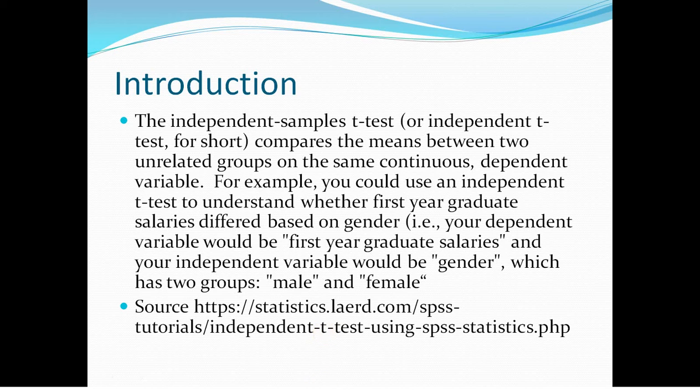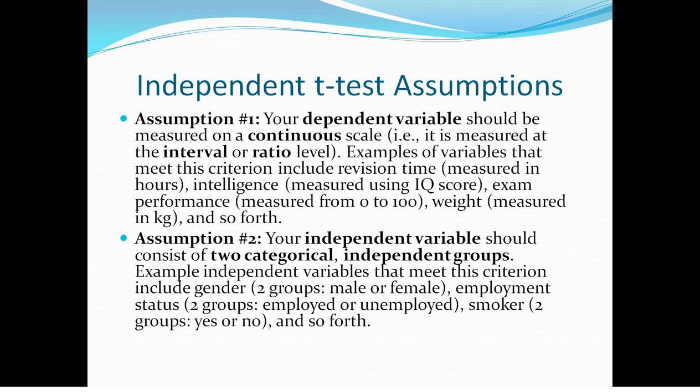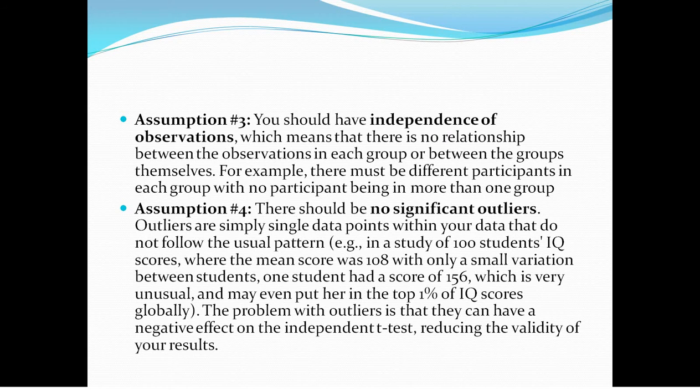There are a number of assumptions. The dependent variable should be continuous, like wage is obviously continuous. Assumption two: your independent variable should have two categories, obviously male/female, yes/no, or took the drug/did not take the drug. Assumption three: independence. The typical example is that when you flip a coin, that has no determination on the outcome of the following flip. Number four: there should be no significant outliers, because usually you do this test when the samples are under 20, and a big outlier could cause havoc.